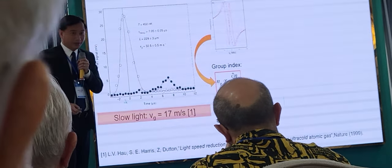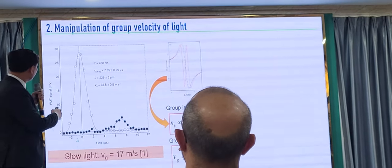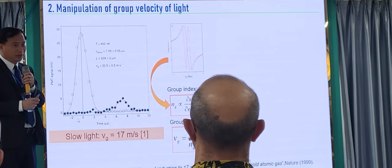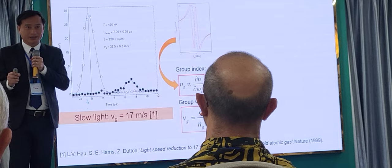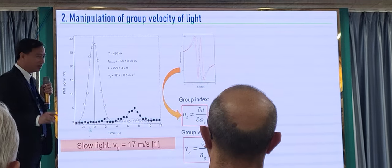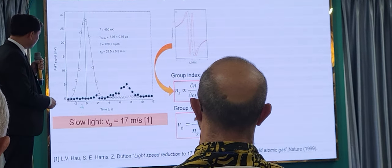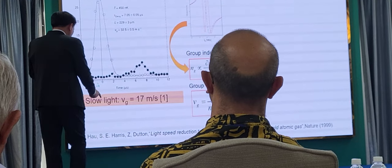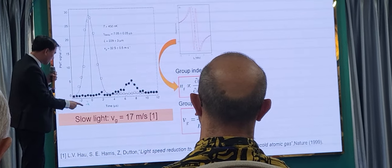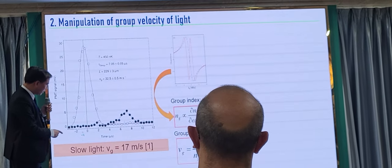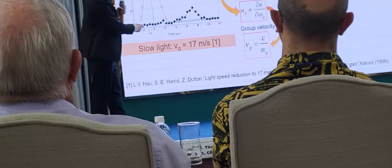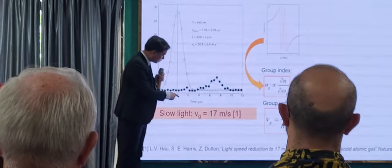The second topic concerning this medium is the manipulation of group velocity of light. We have so far only developed the theoretical side of this experiment, as we did not have enough time in the last five years. This result was observed and published in Nature a few years ago — in that experiment, they slowed down the group velocity in the Bose-Einstein condensate medium to 17 meters per second.